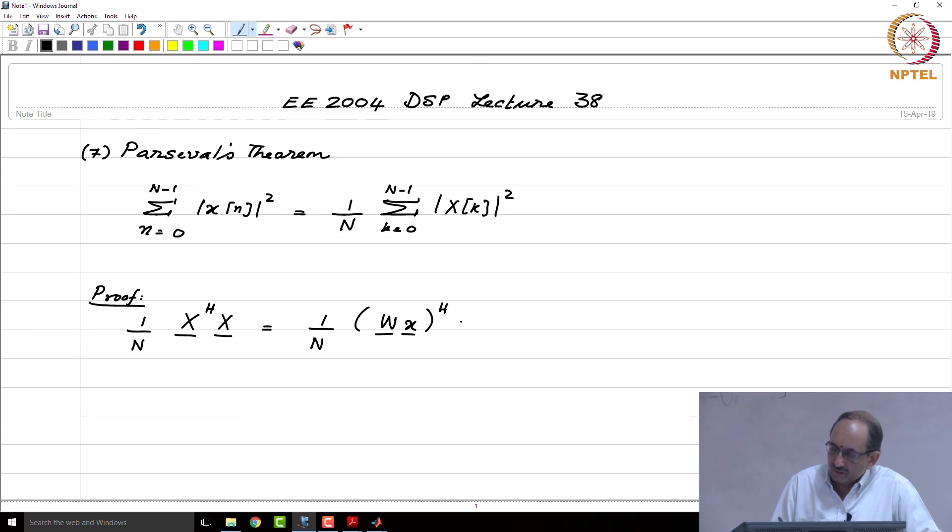And hence, x Hermitian x can be written like this. And from simple linear algebra,